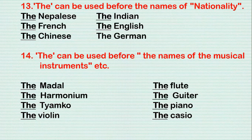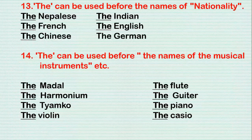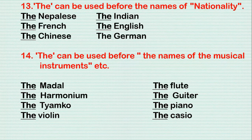Rule 14: 'The' can be used before the names of musical instruments. For example: the harmonium, the tempo, the violin, the flute, the guitar, the piano, Casio, etc.